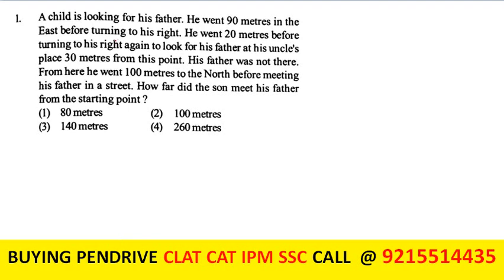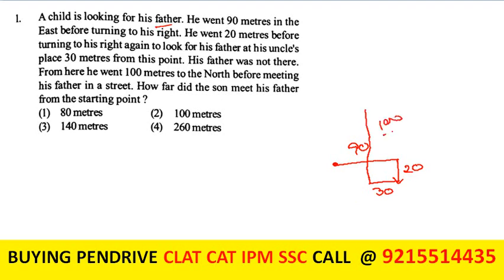Our first statement: a child is looking for his father. He went 90 meters to the east, then turned right and went 20 meters, then turned right again and went 30 meters. His father was not there. From there, he went 100 meters to the north, where he met his father.